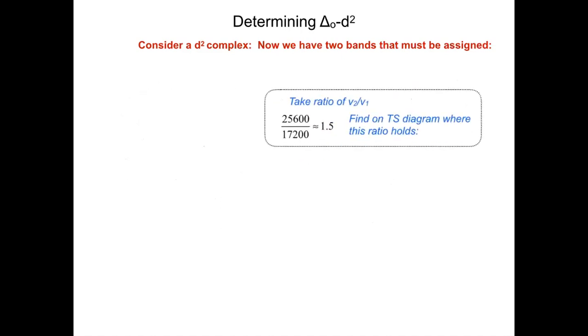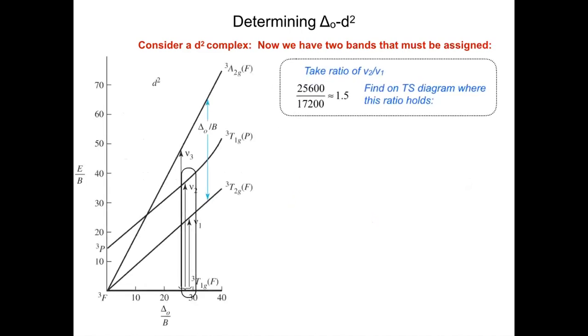Now that we have this ratio, the next thing we want to do is assign transitions on the Tanabe-Sugano diagram. These two transitions, the 25,600 and the 17,200, correspond to transitions from the triplet T1G to triplet T2G, and the second transition goes from the ground state to the triplet T1G. Those are the two transitions, V1 and V2, that we are looking at.